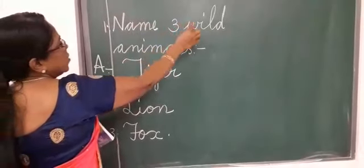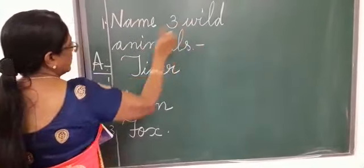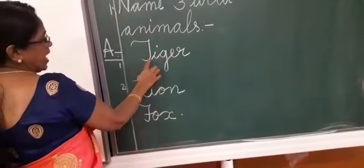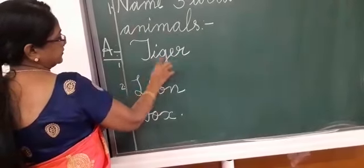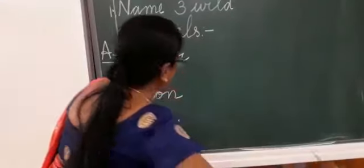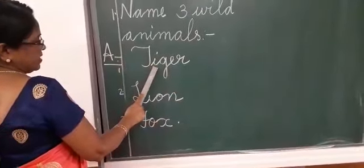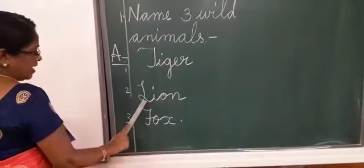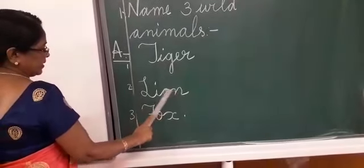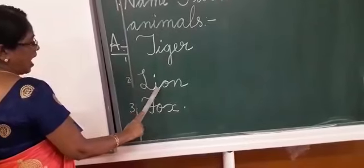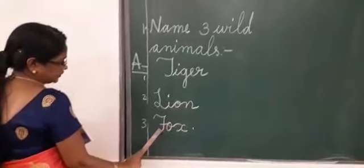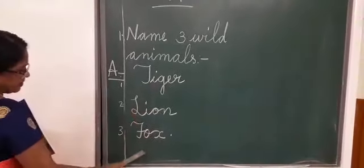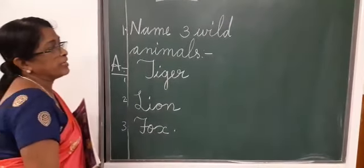Name three wild animals: Tiger, Lion, Fox. All of you read the spelling of tiger: T-I-G-E-R. Tiger. Lion: L-I-O-N. Lion. Once again: L-I-O-N. Fox: F-O-X. So these three names you have to learn for the exam.